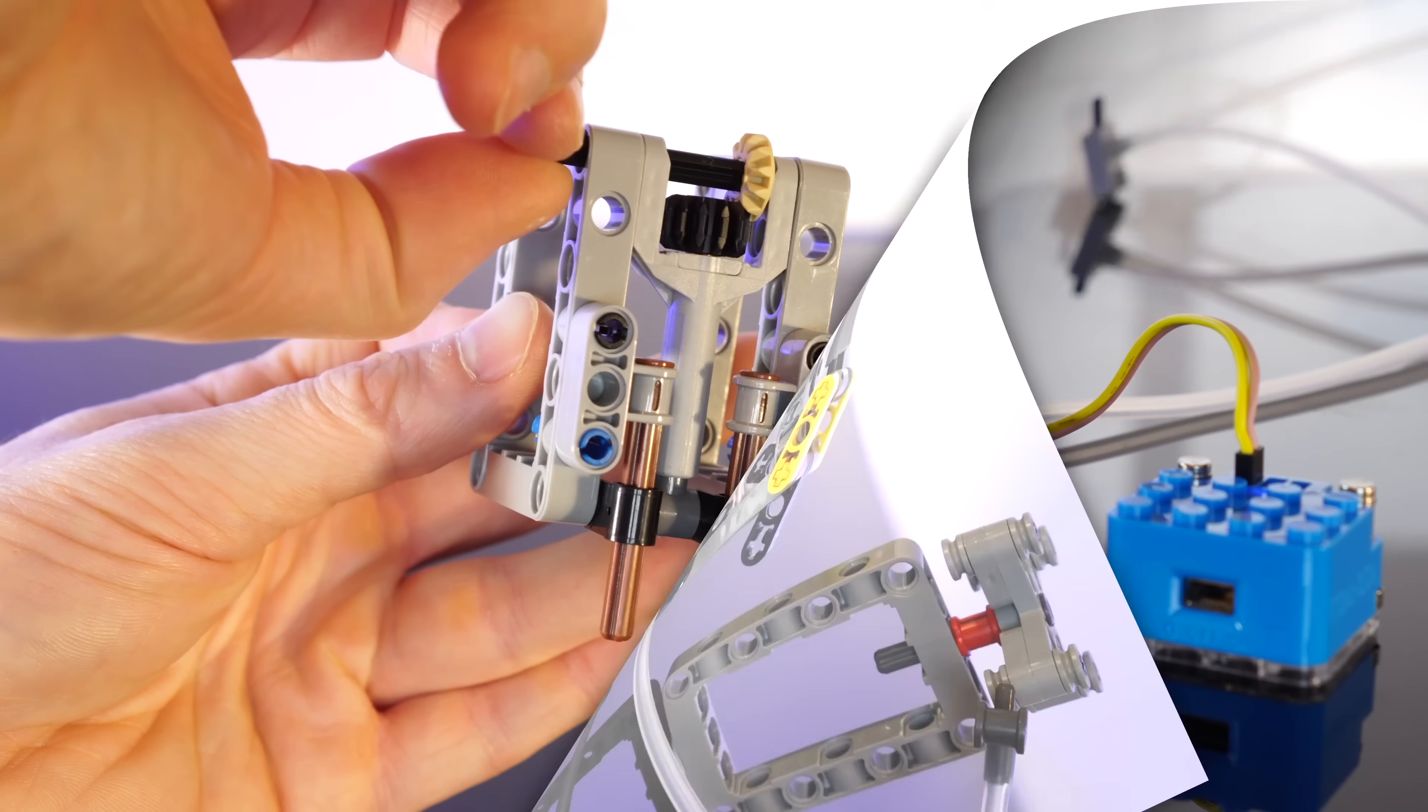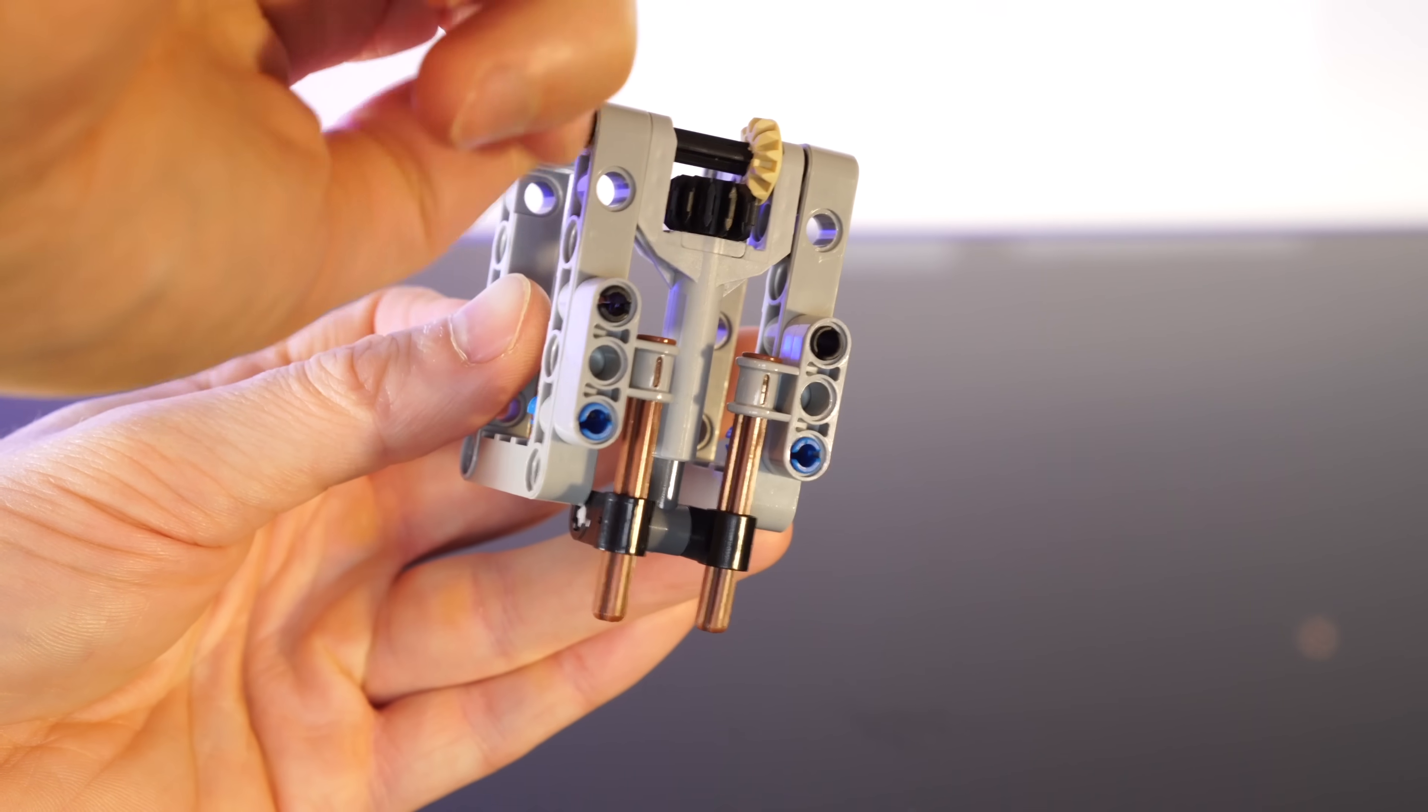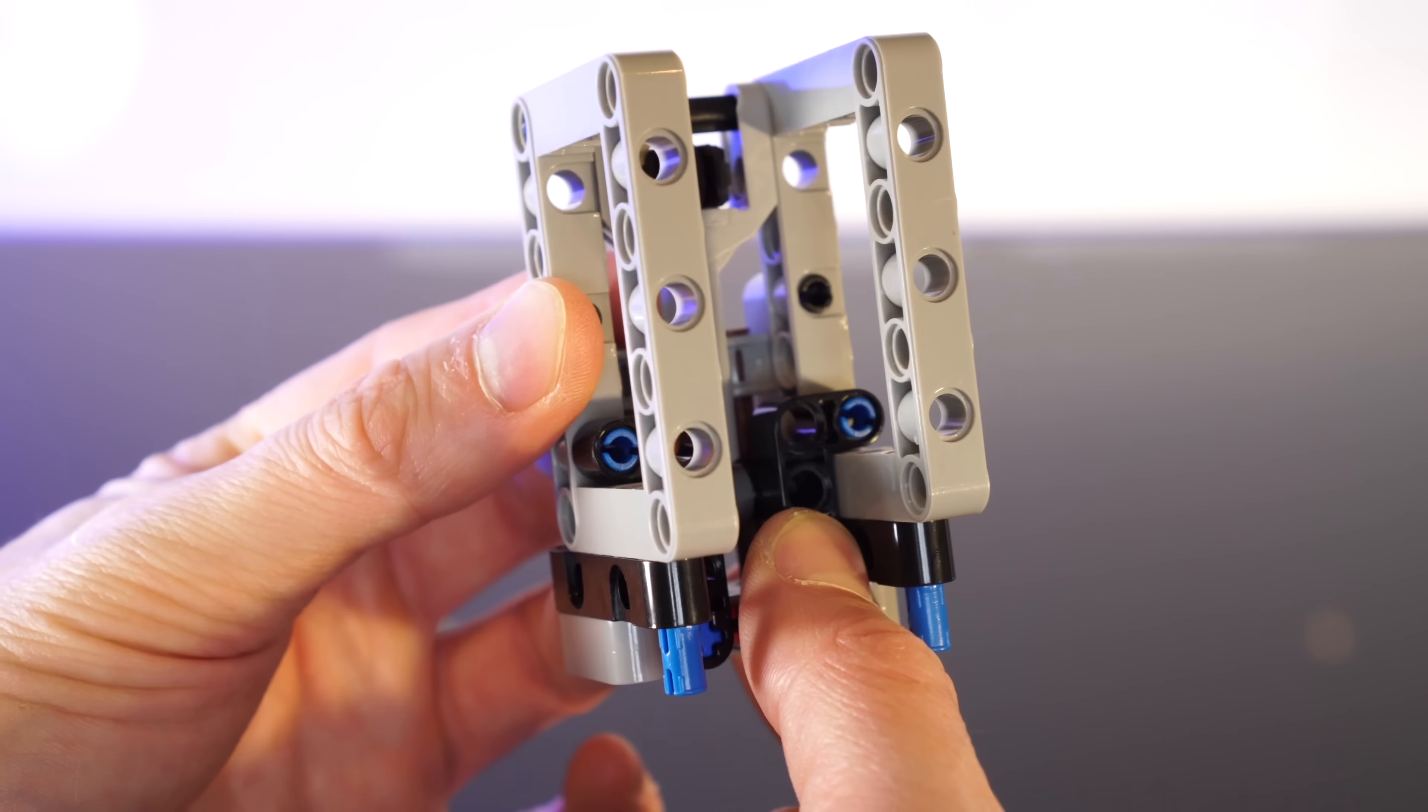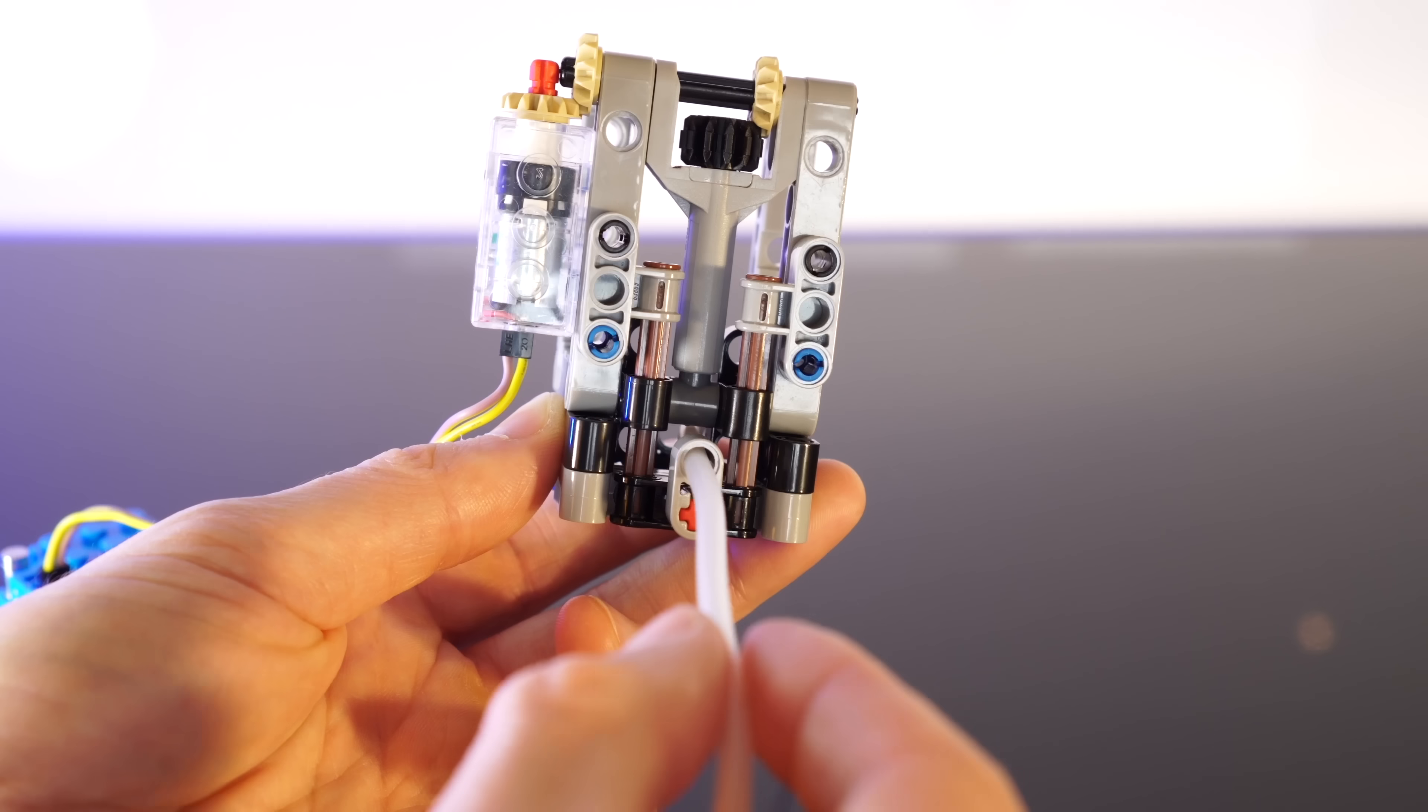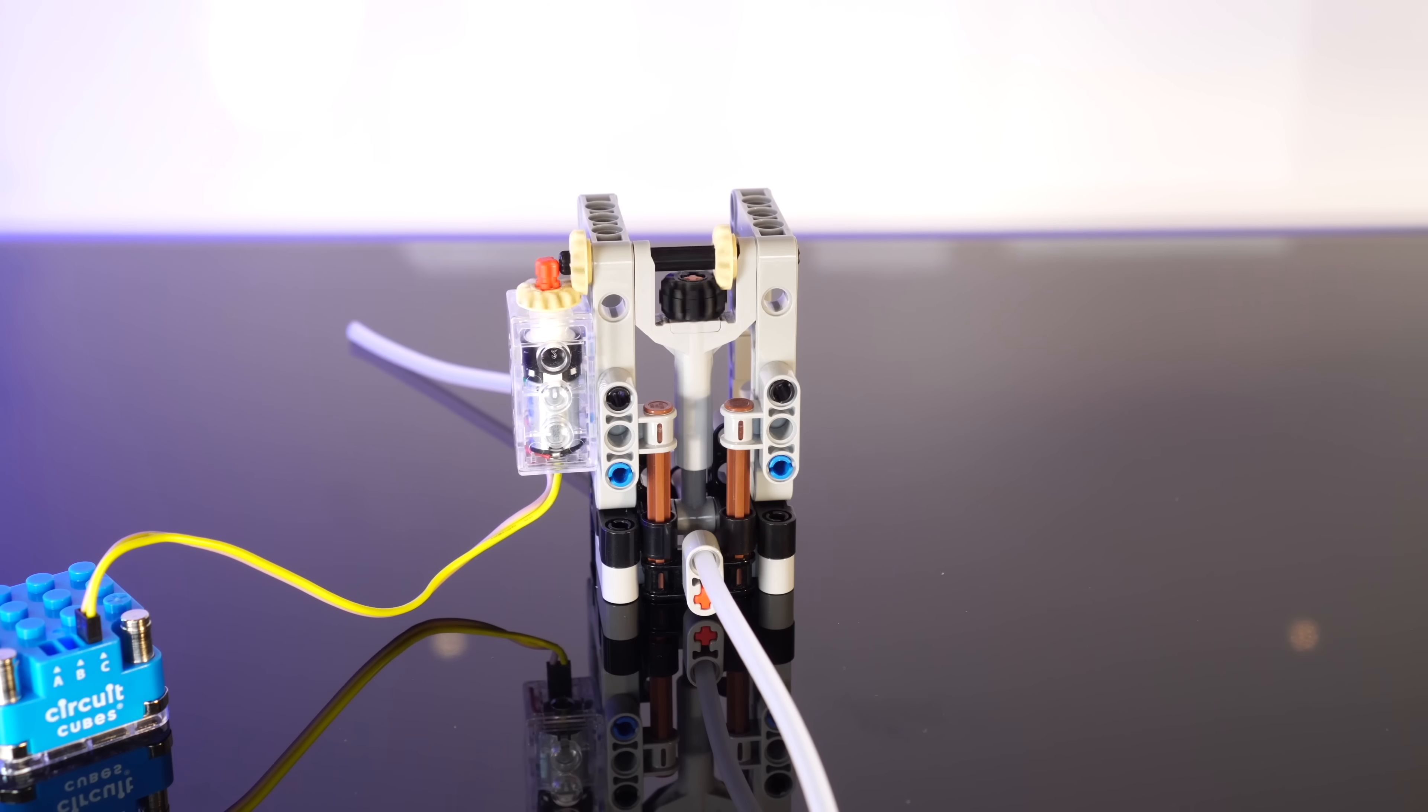So, instead, I developed this mechanism, which should crimp the pipe much quicker by simply putting pressure on the pipe. Then, we'll motorize it using the same little motor. Now, the idea here is we can feed the pipe through these holes, and the linear actuator will just directly press on the pipe.